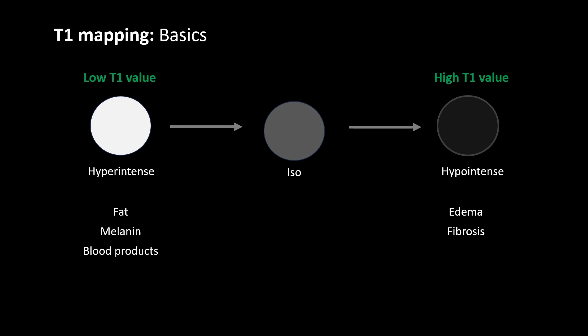Now coming to basics of T1 mapping. If a substance has a low T1 value or low T1 relaxation time, it will be hyperintense on T1, like fat, melanin, blood products, or proteinaceous contents. Most pathologies in the body are T2 hyperintense and T1 hypointense, meaning they have a high T1 value or high T1 relaxation time — like edema and fibrosis, which will have a high T1 value.